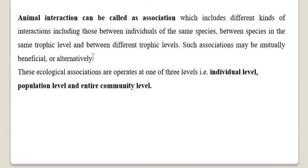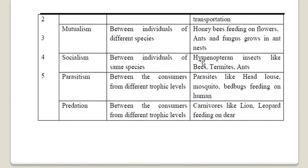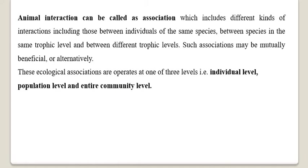Animal interaction, or association, includes interactions between individuals of the same species, between species at the same trophic level, and between different trophic levels. Such associations may be mutually beneficial, alternatively beneficial, or harmful — between the same species, different species, species sharing the same habitat, or species of different habitats.